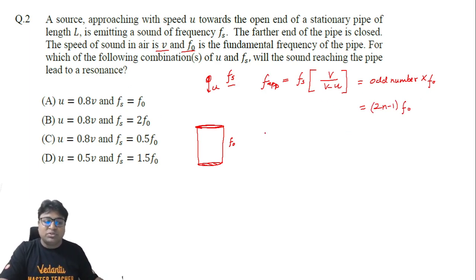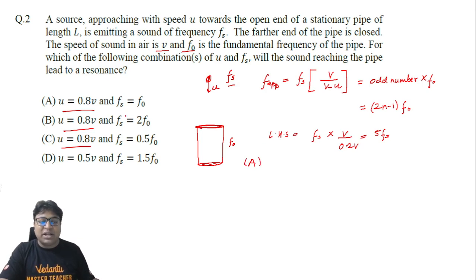Keeping this in mind, we are going to check all four options. Options A, B, and C all talk about the same value of u, which is 0.8v. Now the left hand side becomes fs times v upon (v minus 0.8v), so that's 0.2v, so it becomes 5fs. Now for option A, the left hand side will become 5fs, and if fs equals f_naught, then the right hand side will become (2n-1) times f_naught, which is fs. It is possible - if I keep n as 3, then we get 5fs. Left hand side also we have 5fs, so option A can be satisfied. So option A is a correct one.